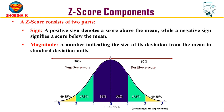The sign of the z-score indicates the direction of deviation from the mean. A positive sign denotes a score above the mean, while a negative sign signifies a score below the mean. The magnitude is the numerical value of the z-score and it represents the size of deviation from the mean, measured in standard deviation units.